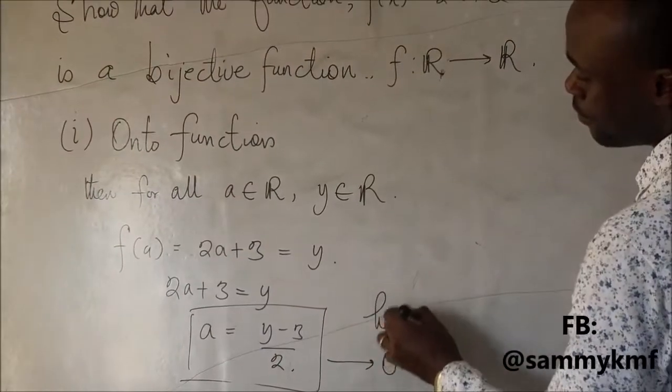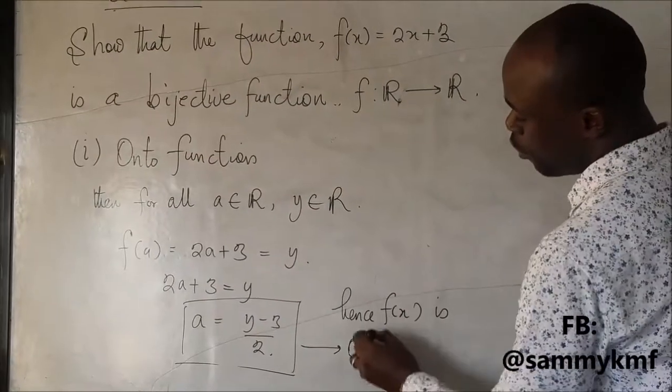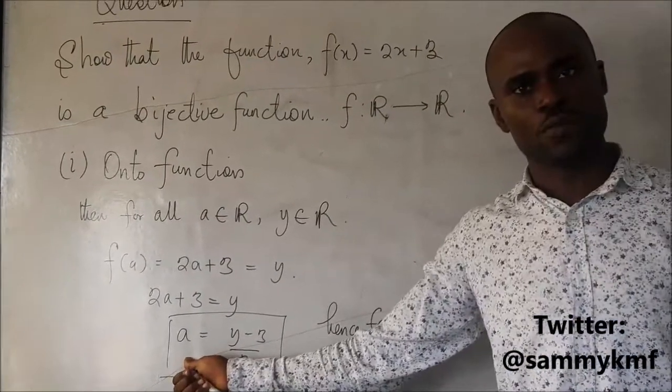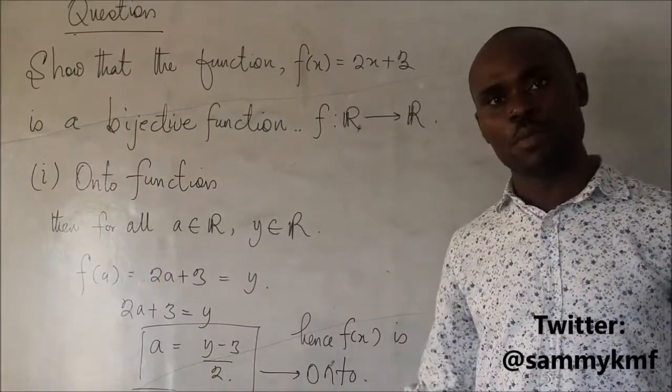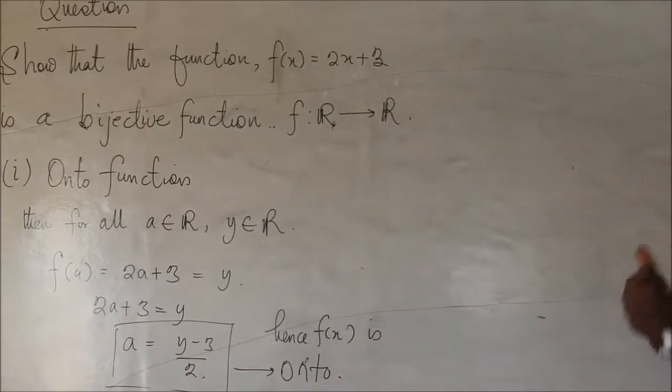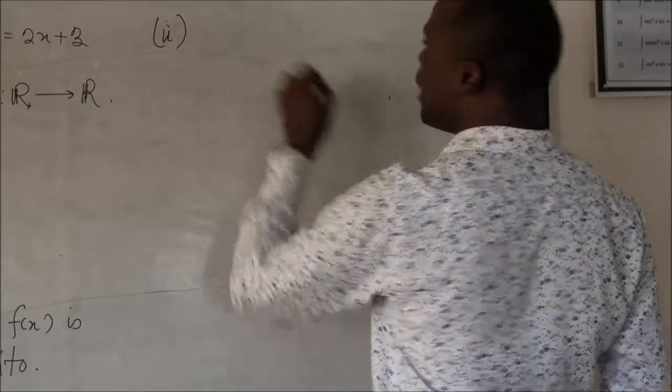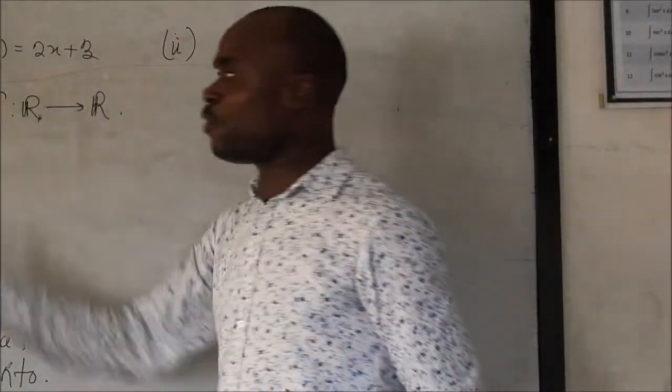So, hence, F of x is onto. Because we simply make a subject of the formula. In some cases, it may not be possible. So, how do we show that it is one-to-one? How do we show that the function is one-to-one? What is the definition of a one-to-one function?